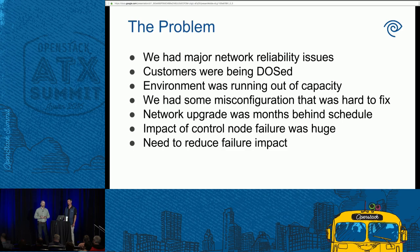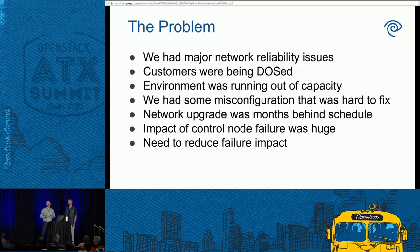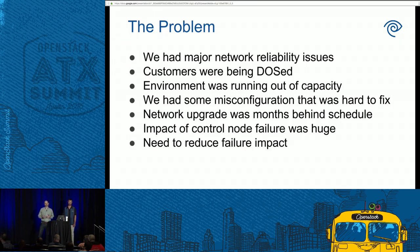At the beginning of the year, Sean and I were on call in back-to-back weeks and we had some network reliability problems. A number of issues were going on at the same time. We had a customer that was being DoS'd on a pretty regular basis. We also had an environment that was close to running out of capacity, and some NIC misconfigurations that were really reducing capacity. To fix that we were going to have to reboot all of our control and compute nodes. We also had a network upgrade that was ongoing and behind schedule.